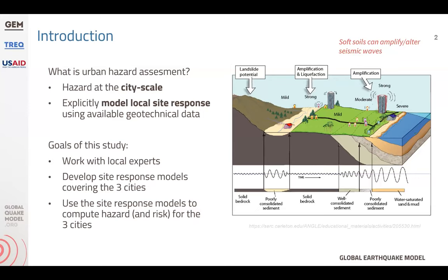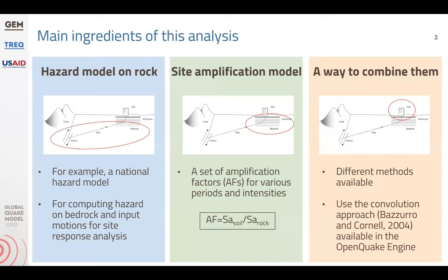The goals of this study are to work with local experts to develop site response models covering all three TREC cities, and then to use the site response models to compute the hazard and risk for those three cities. The main ingredients of this analysis are: first, a hazard model on rock, an example of which was just shown by Kendra for the Dominican Republic; second, a site amplification model for the cities — essentially a set of amplification factors for various spectral periods and bedrock intensities, defined as the spectral acceleration on soil divided by the spectral acceleration on rock; and finally, a way to combine both components. For this project, we used the convolution approach, which is available in the OpenQuake engine.